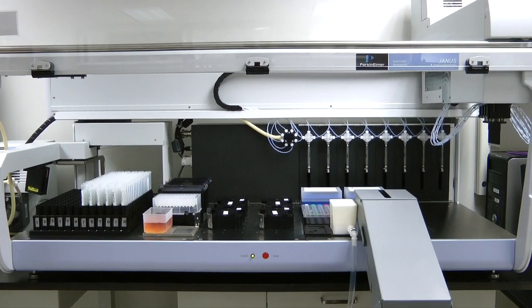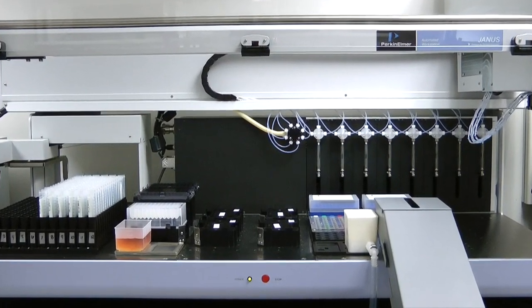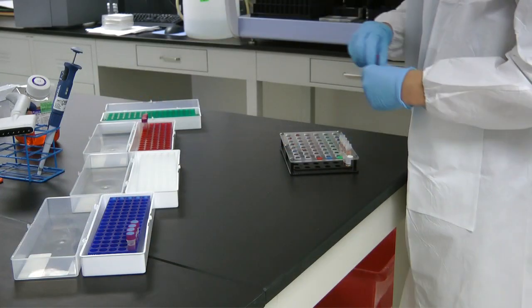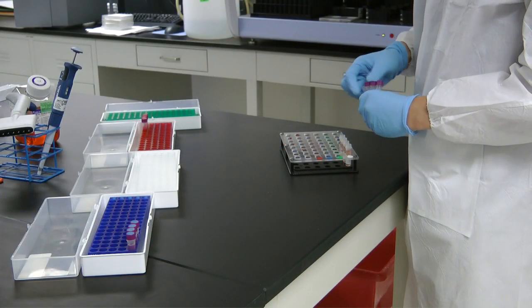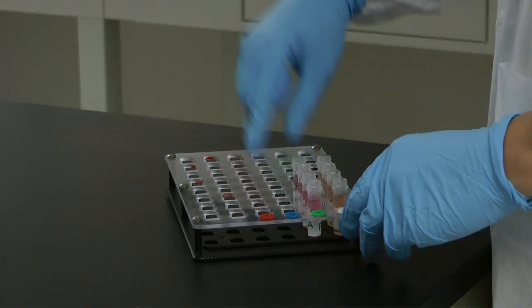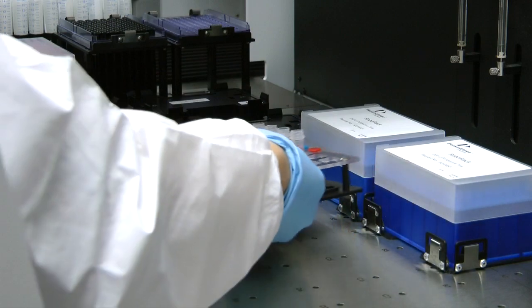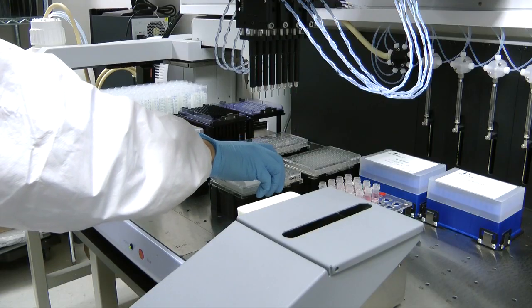Cell plating and reagent addition is also made quick and easy with the Janus liquid handling system. Several vials of reagents including AIM-5 cell media, panel A, panel B, and PHA, and four T-spot TB plates labeled with unique identifiers are loaded to specific positions on the Janus.